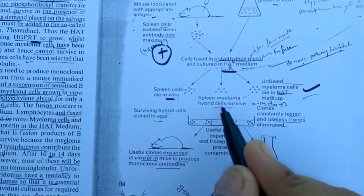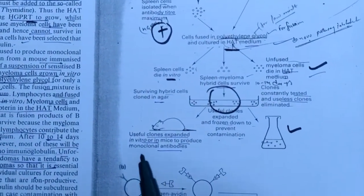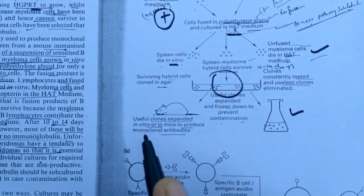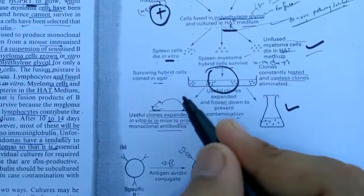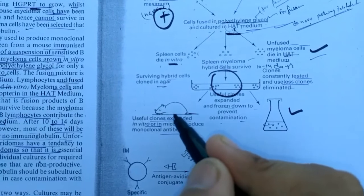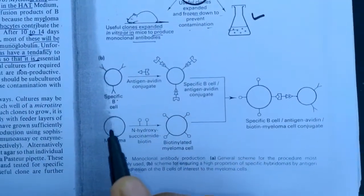Useful clones are expanded and frozen down to prevent contamination. Here the useful clones are collected and preserved in low temperature condition. Useful clones are expanded in vitro or in mice to produce monoclonal antibody. Here the hybridoma will be re-injected here and it will produce one type of antibody.